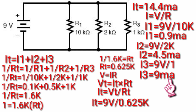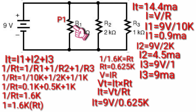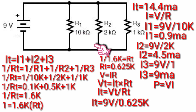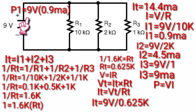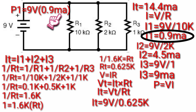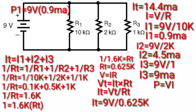Now we can calculate the power from each resistor. Let's start from R1 using the power formula: power is equivalent to voltage times current. P1 is equivalent to voltage 9V times current I1, 0.9mA. So P1 will be 8.1 milliwatts.